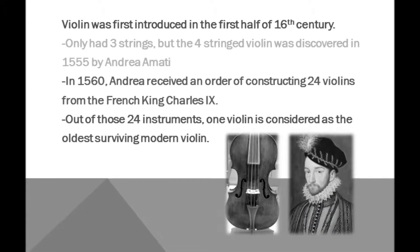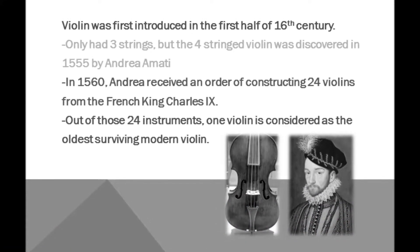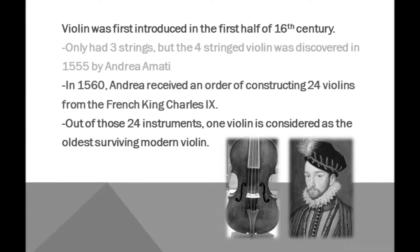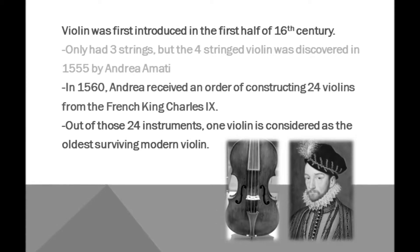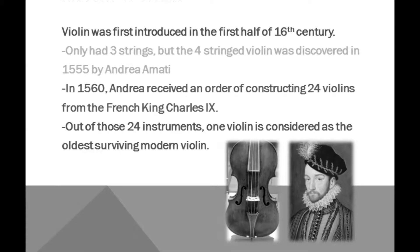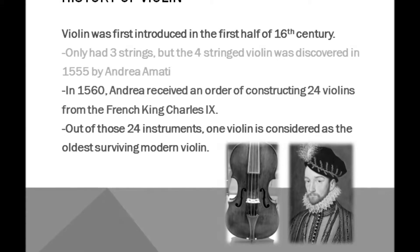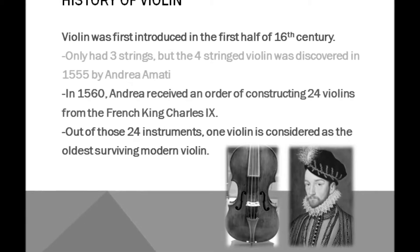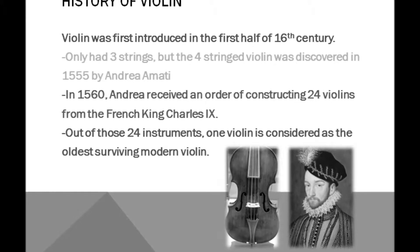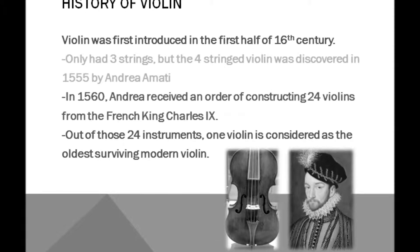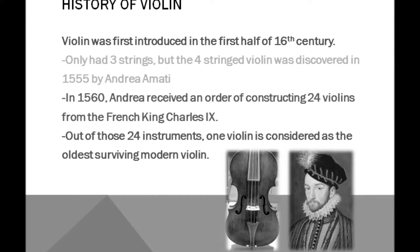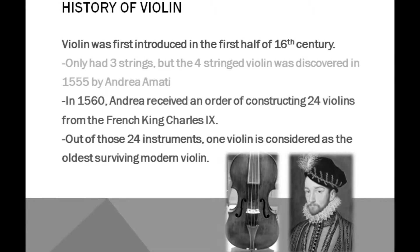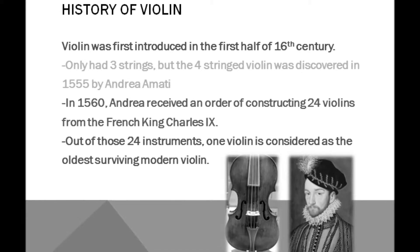The violin, one of the most famous stringed instruments, was first introduced in the first half of the 16th century. Violin only had three strings at first, but the four-stringed violin was later developed in 1555 by Andrea Amati, who was known for making the first musical instrument of the modern violin family.